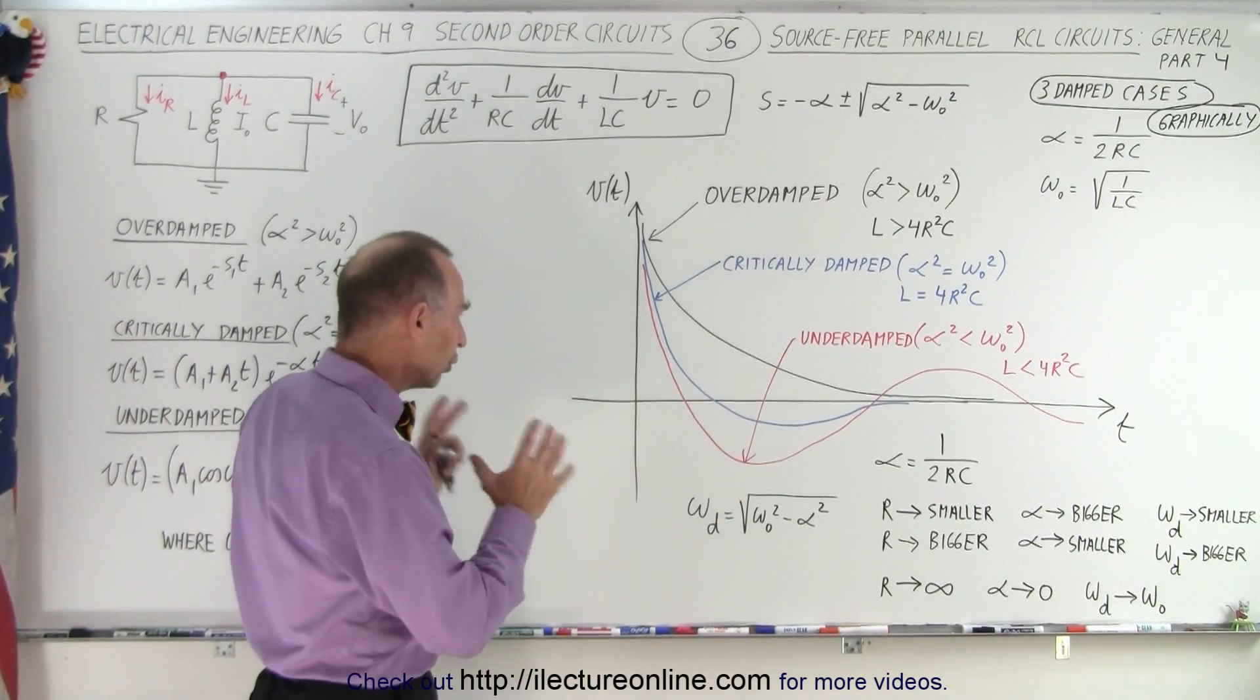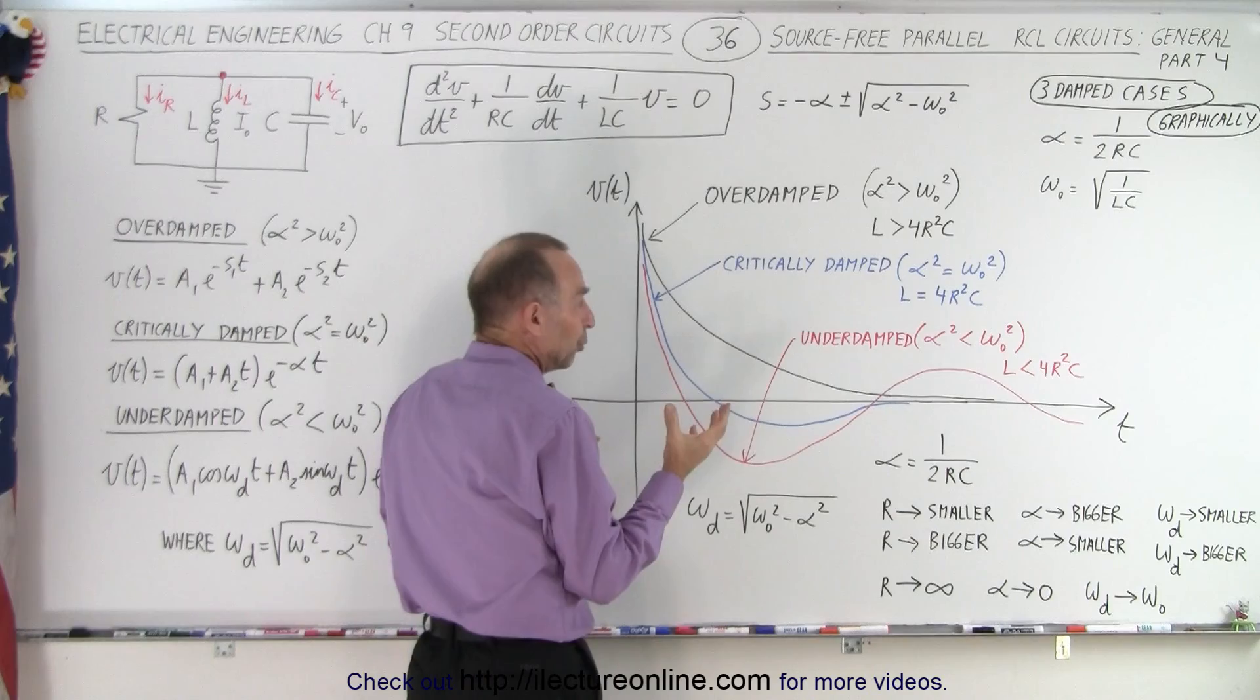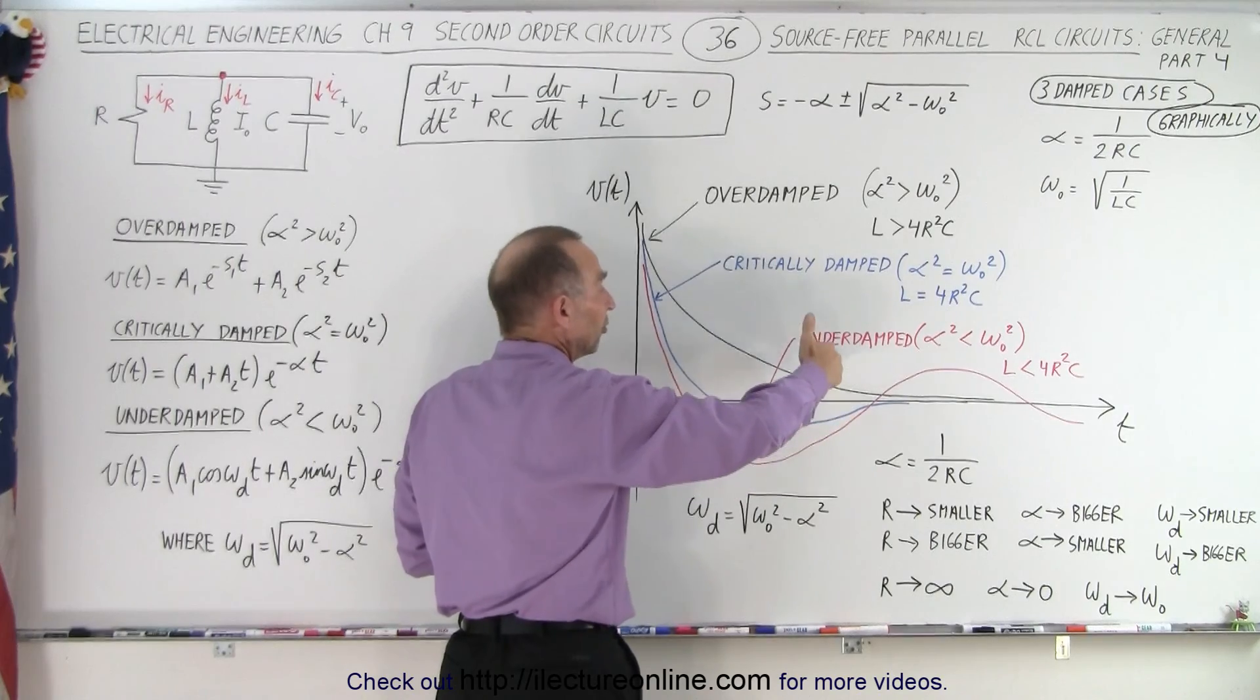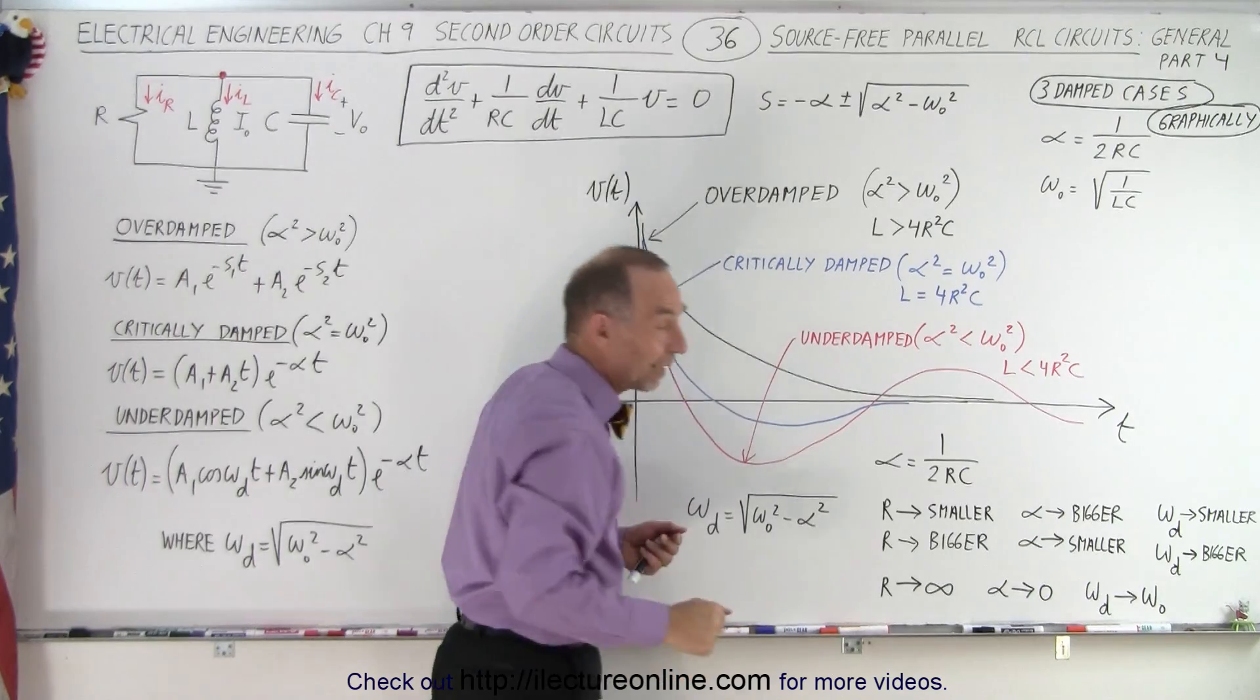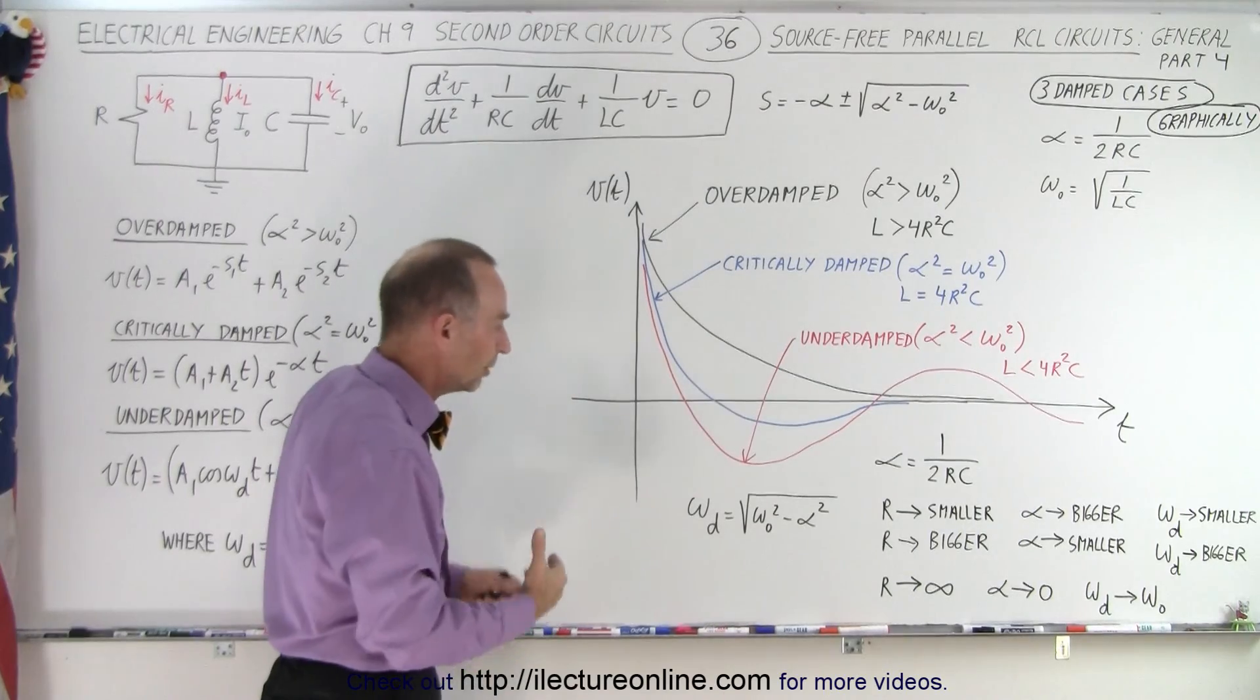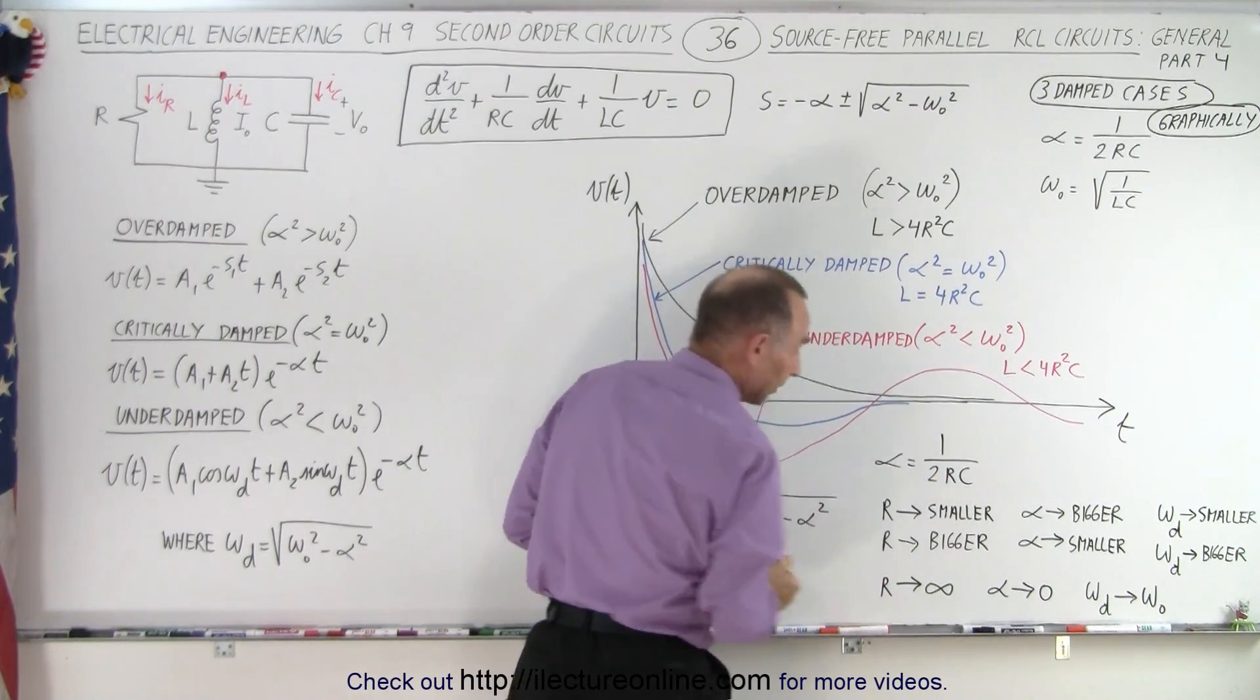So now let's take a closer look at the underdamped case, the red curve right here. Notice that is the case where the resistance is large enough so that it's not critically damped or overdamped. The smaller the resistance, the more you tend to go to an overdamped case; the bigger the resistance, the more you tend to go to an underdamped case. Now we still can have large resistances - it can be smaller or bigger.